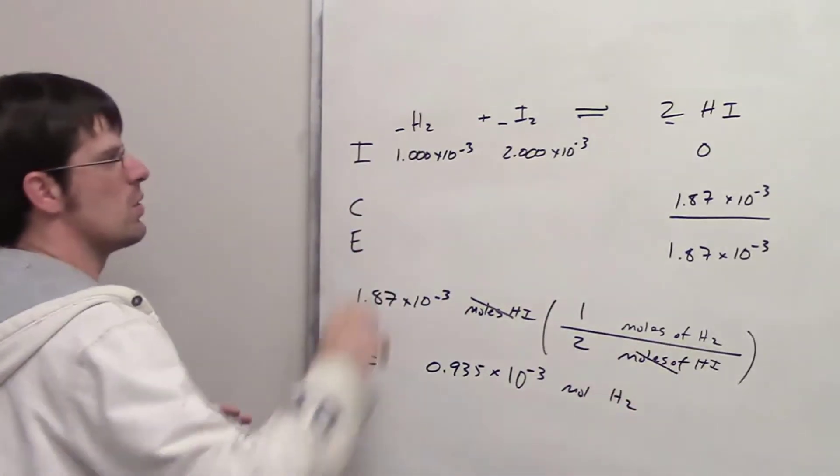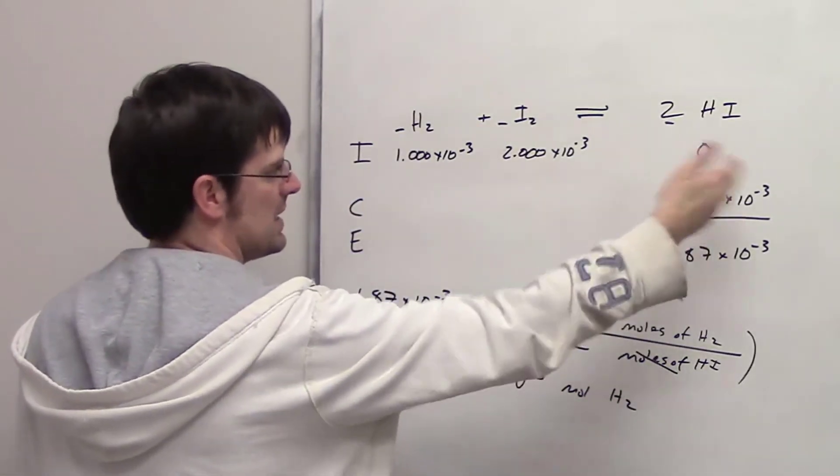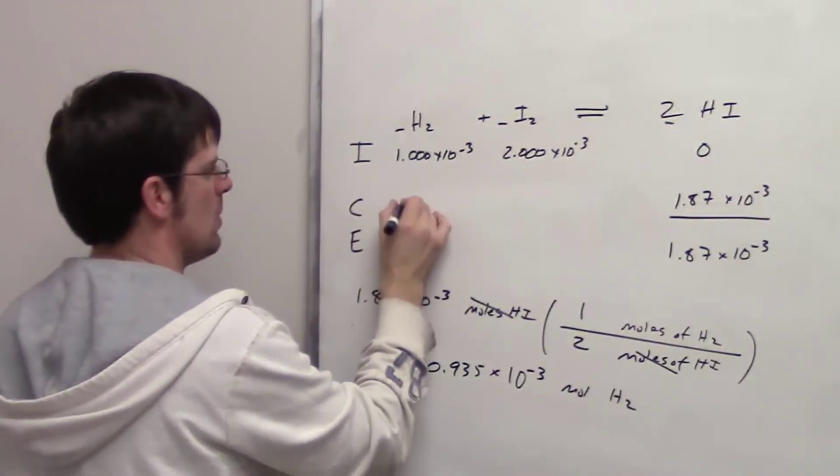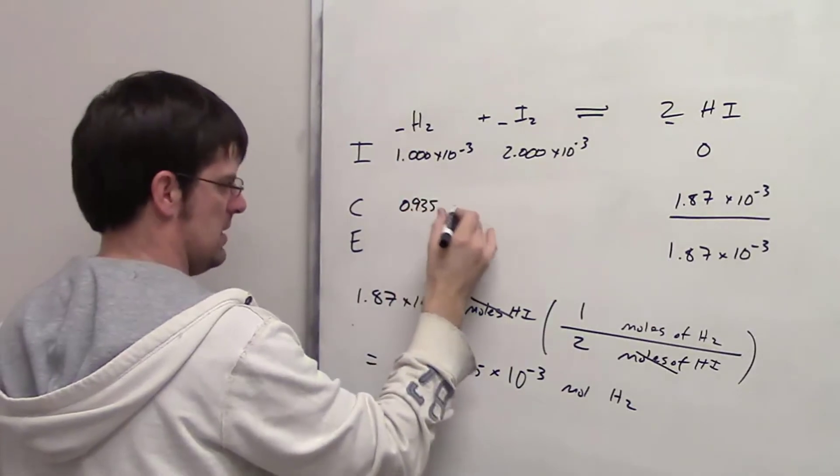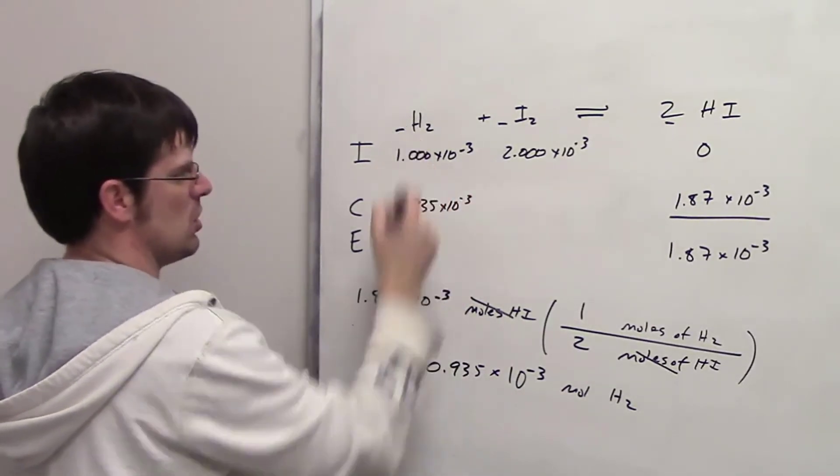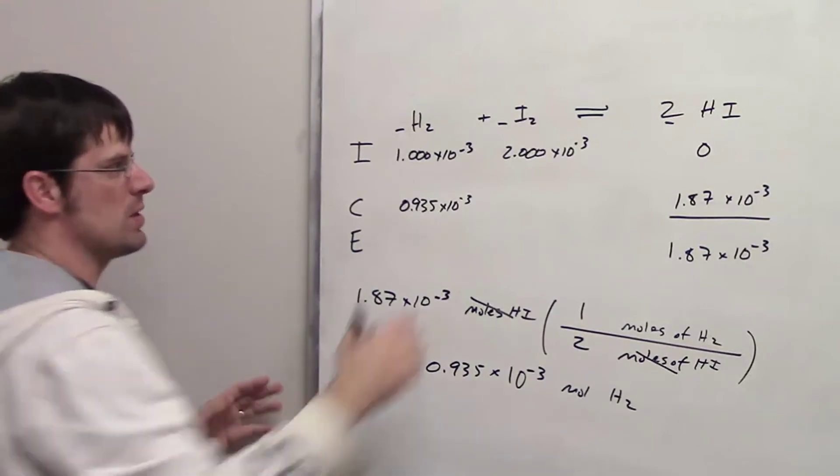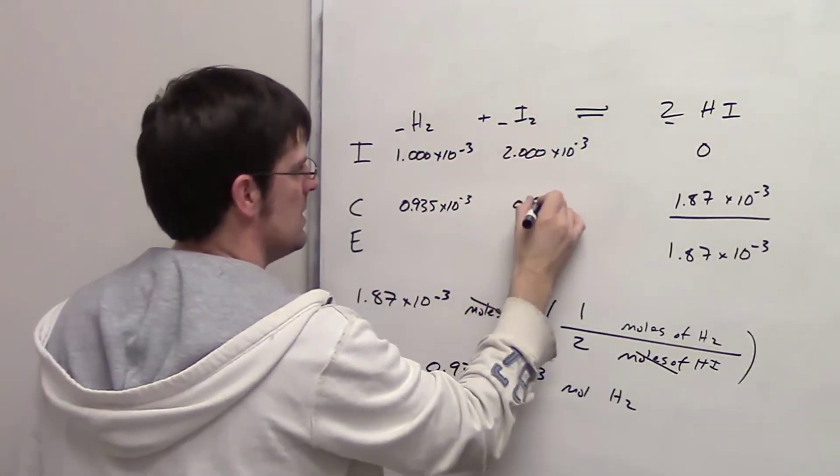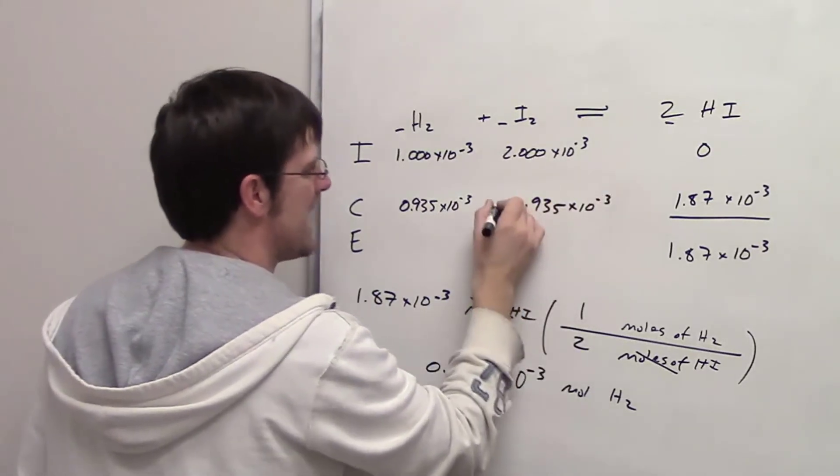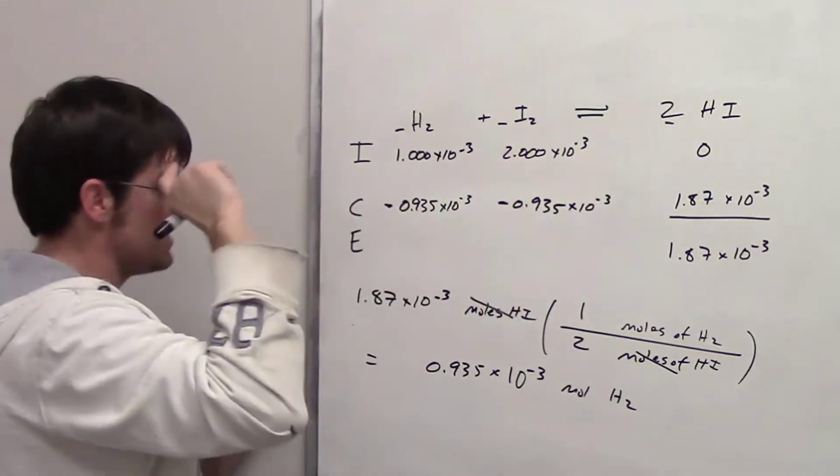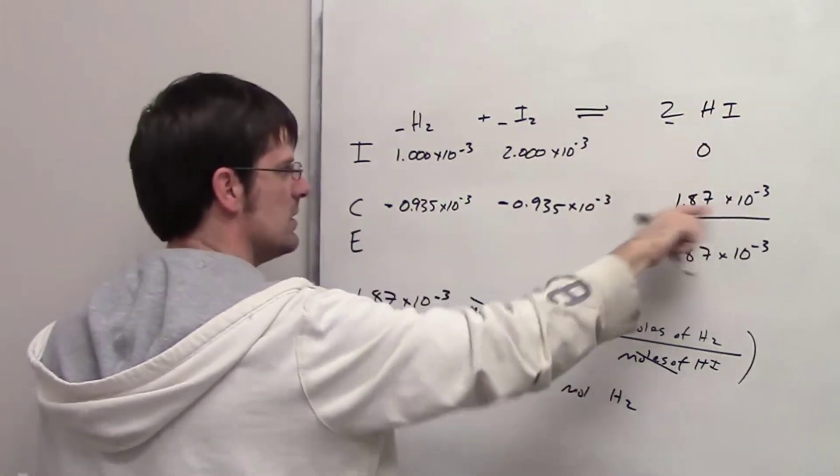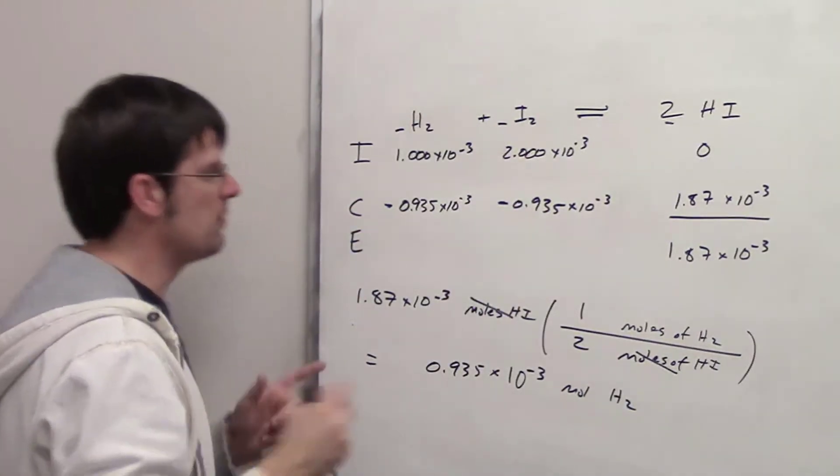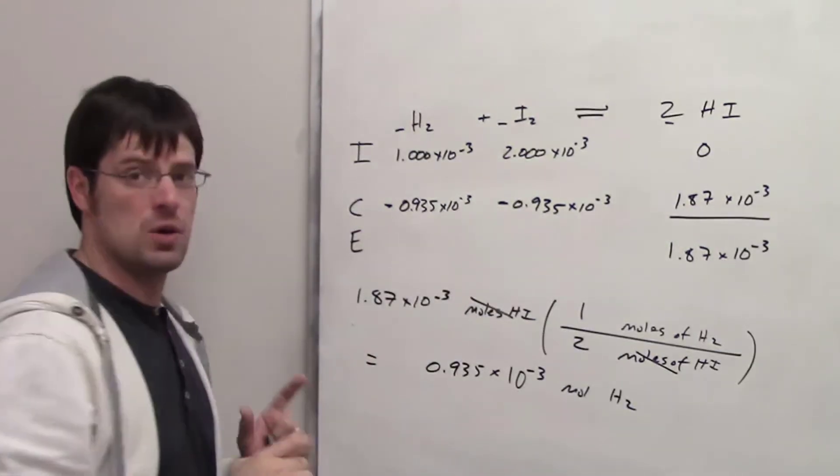What that means, then, is in order to produce 1.87 times 10 to the negative third molar equivalence of HI, I have to sacrifice 0.935 times 10 to the negative third molar equivalence of H2. If you do the stoichiometry for I2, you end up getting also the same answer because it's a one-to-one equivalency between these. What sign do I use for this? I'm going to use a negative sign, and the reason is because as this item increases, these have to decrease by these molar corresponding amounts. Hopefully that makes sense.